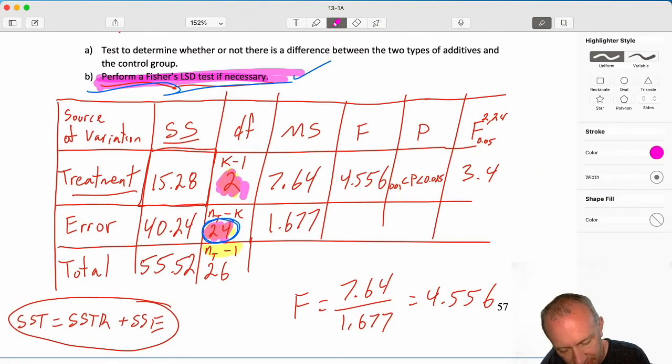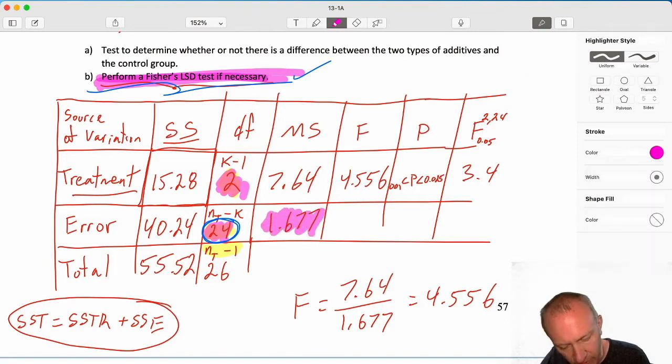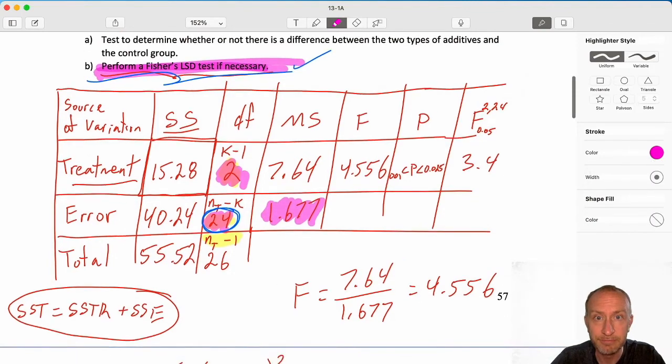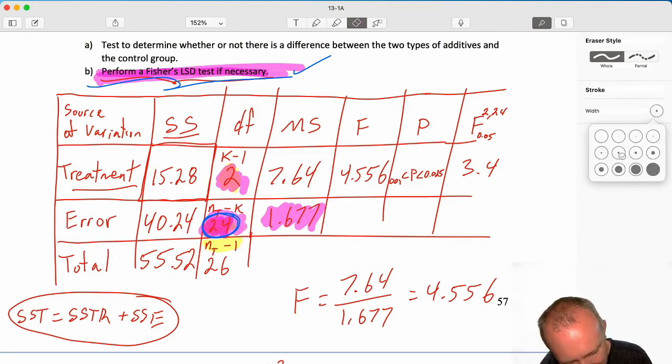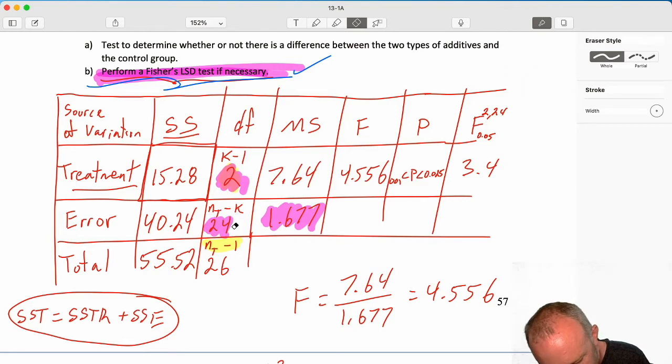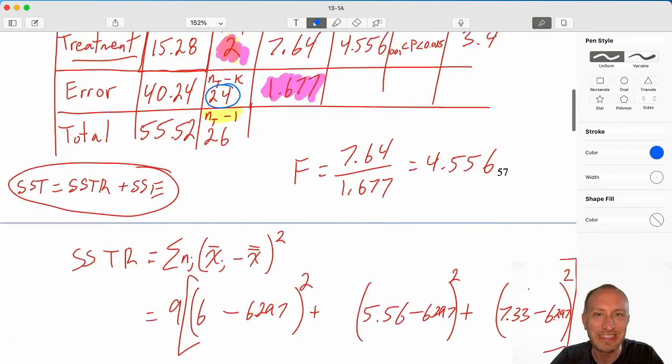Here I can see those degrees of freedom, 1.677. That's not degrees of freedom. Our MSE is 1.677. Our degrees of freedom is over here, 24. It's been highlighted so many times it's hard to see. So there's our degrees of freedom, 24. MSE is 1.677.